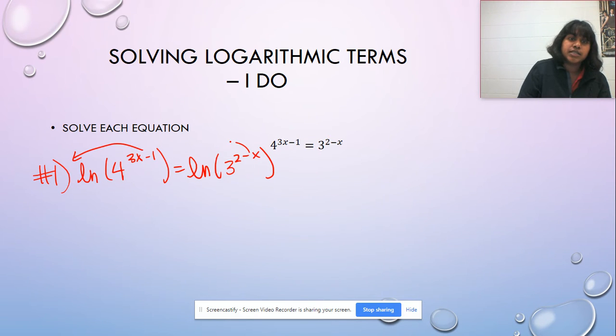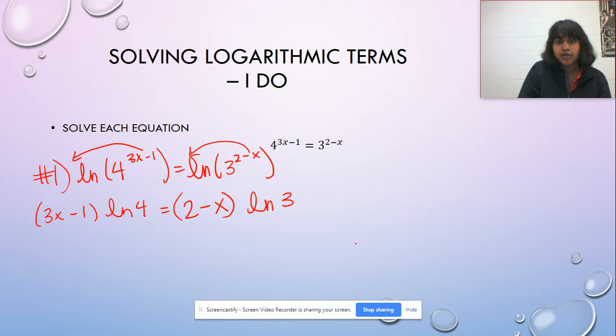Now these are power rules, so I get to pull them forward. So I end up with 3x minus 1 times the natural log of 4 is equal to 2 minus x times the natural log of 3.